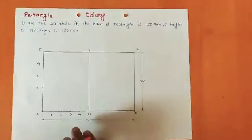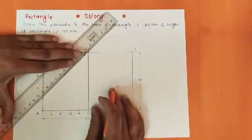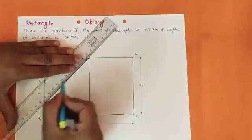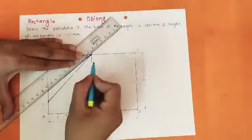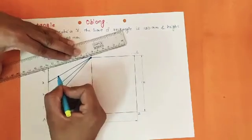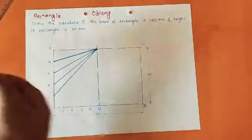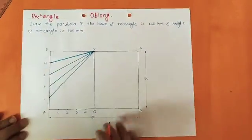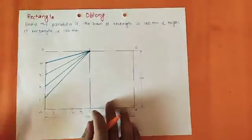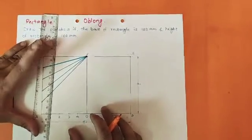Now join all these points on AO to point V. So draw lines 1V, 2V, 3V, and 4V. V is the point through which the parabola's locus is going to pass, so V lies on the locus of the parabola. Next, draw vertical lines through the horizontal division points on AD using your drafter or roller.